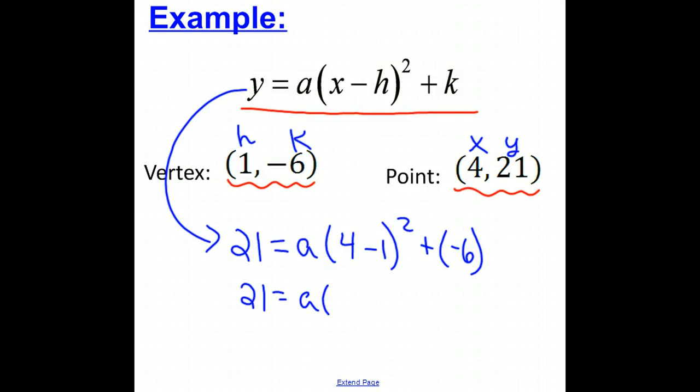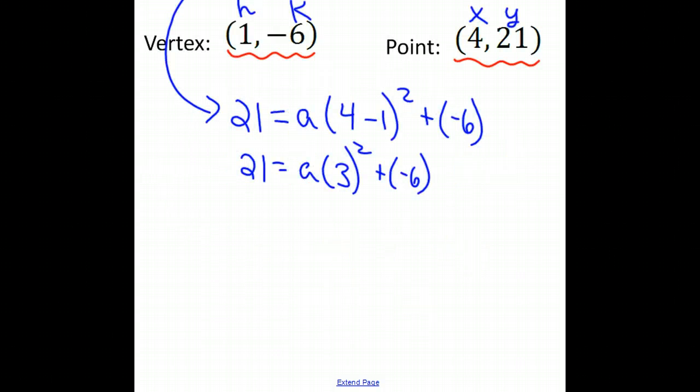21 equals a times 4 minus 1 is 3. We're going to square that plus the negative 6. So we have 21 equals 3 squared is 9. We get 9a plus negative 6.